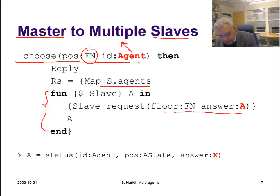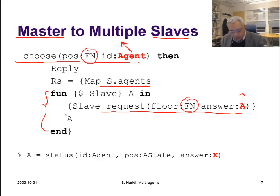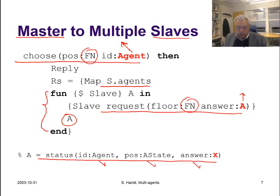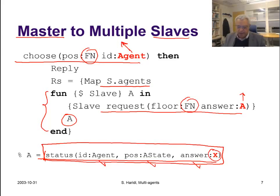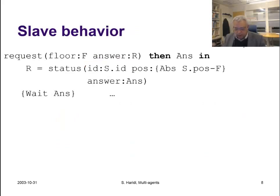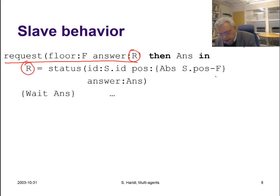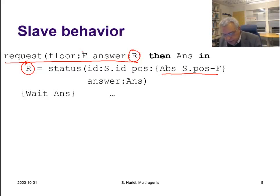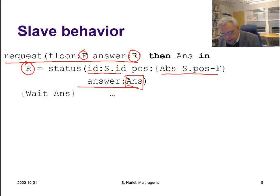When the lift gets a request with an unbound answer data flow variable, it binds that variable to the relative position between itself and the requesting floor, and sends back its identifier along with a data flow variable answer to receive the verdict of the decision. It then waits on that answer variable.